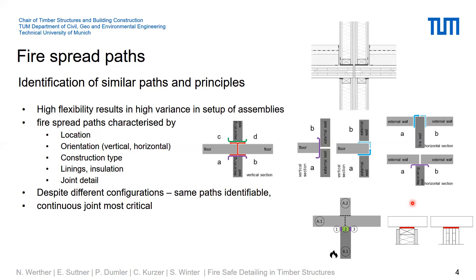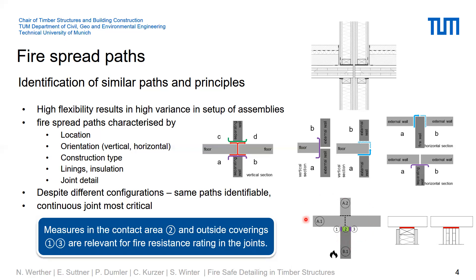We also identified potential measures and where these measures could be located, as shown in this drawing. For timber structures we always have the timber element itself — whether it's a light timber frame or mass timber element — and this timber member is in contact with another timber member. That means we have a contact area, numbered here as two, and we have measures which can be applied on the outside, numbered as one and three, which can be a lining, a ceiling, and similar elements.